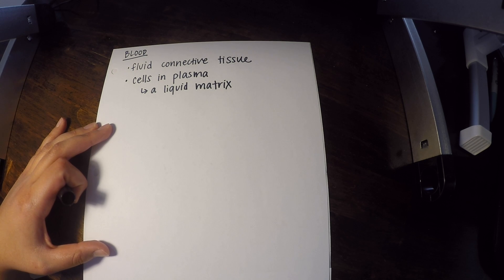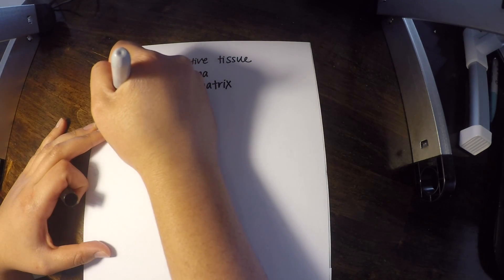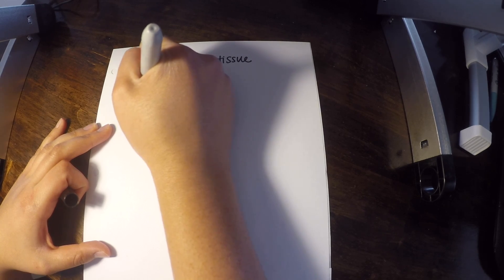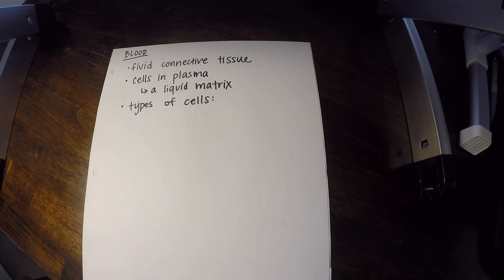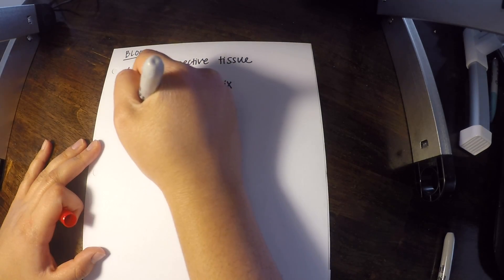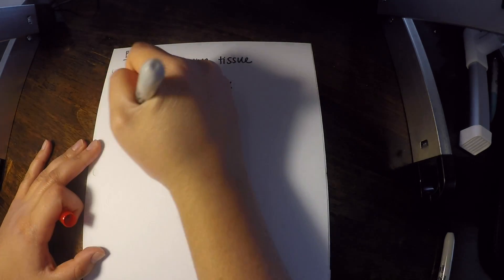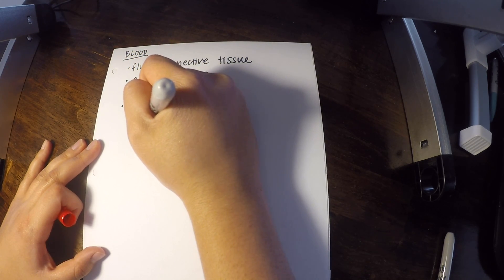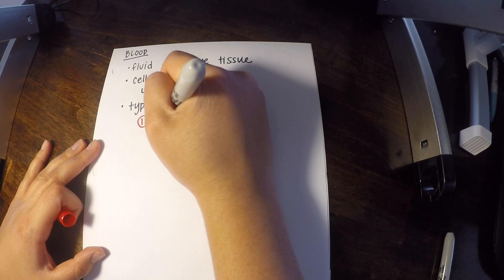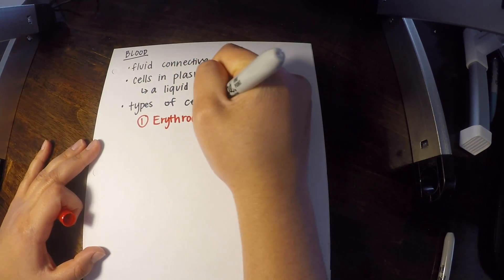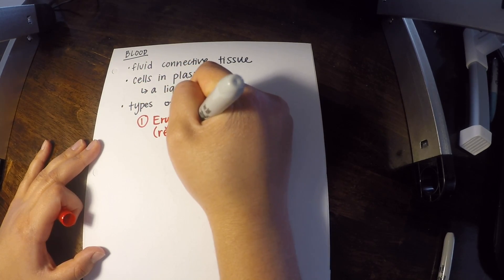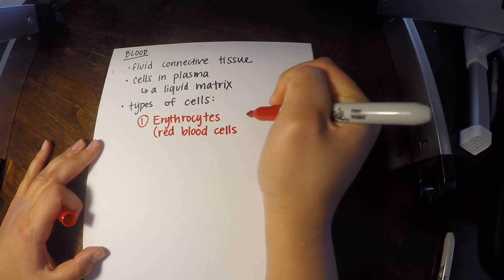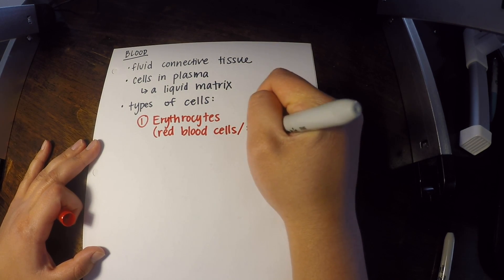Now let's break down the cells a little bit more. So types of cells. The first type we're going to talk about is red blood cells. But the anatomical or scientific name are erythrocytes, red blood cells, and sometimes we'll abbreviate it as RBC.